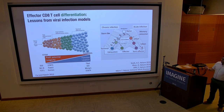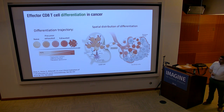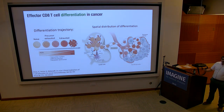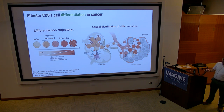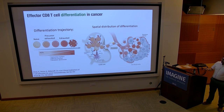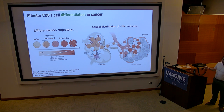We're quite interested in understanding how this framework, first described in viral infection, is now applying to other challenges. In the context of cancer, this has become the dominant model — the idea that precursor exhausted cells give rise to either effector cells or exhausted cells. There's also this idea of spatial differentiation: precursor exhausted cells might reside in lymphoid tissue and over time migrate to the tumor and become exhausted within it. Therapy might fix cells in the tumor or improve those coming to the tumor to drive effector clearance.